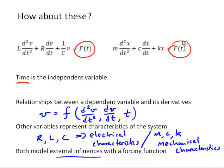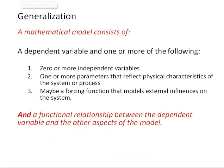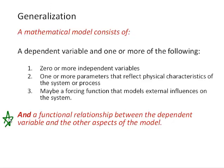So let's generalize this and make some conclusions about mathematical models. In general, a mathematical model will consist of a dependent variable and one or more of the following: zero or more independent variables; one or more parameters that reflect physical characteristics of the system or process; possibly a forcing function that models external influences on the system; and importantly, some sort of functional relationship between the dependent variable and the other aspects of the model.